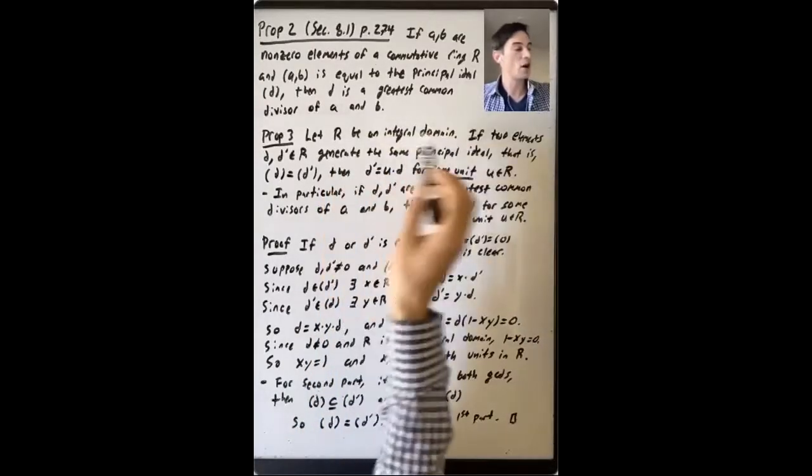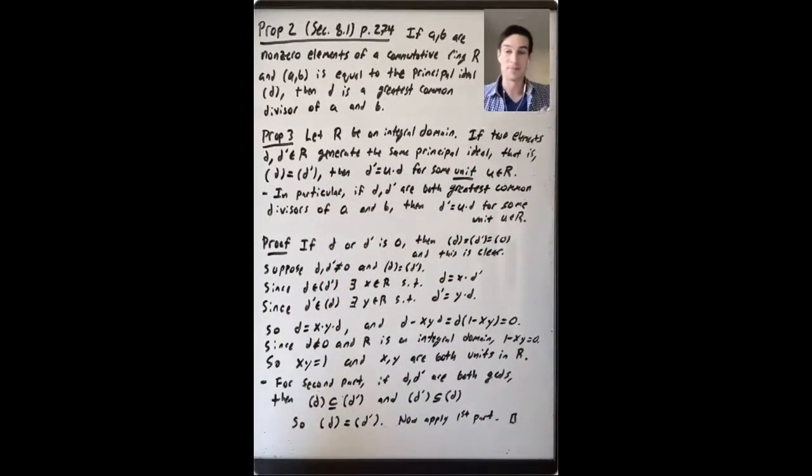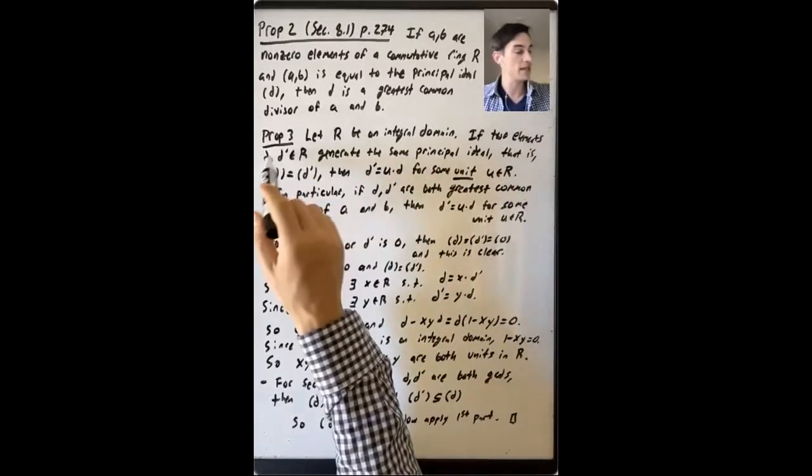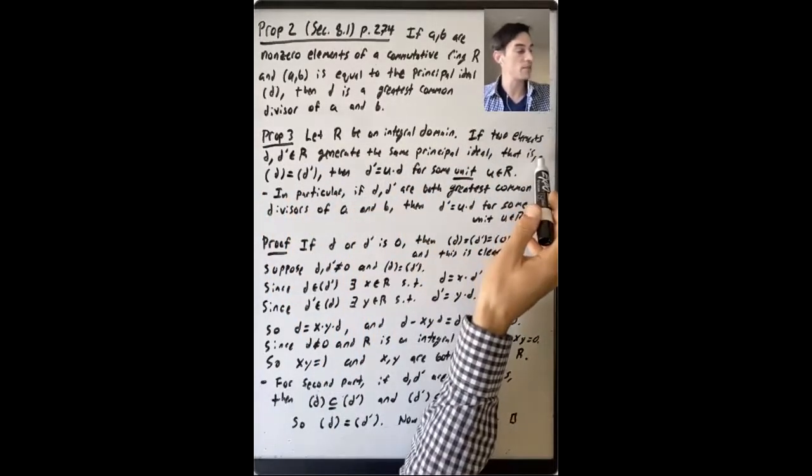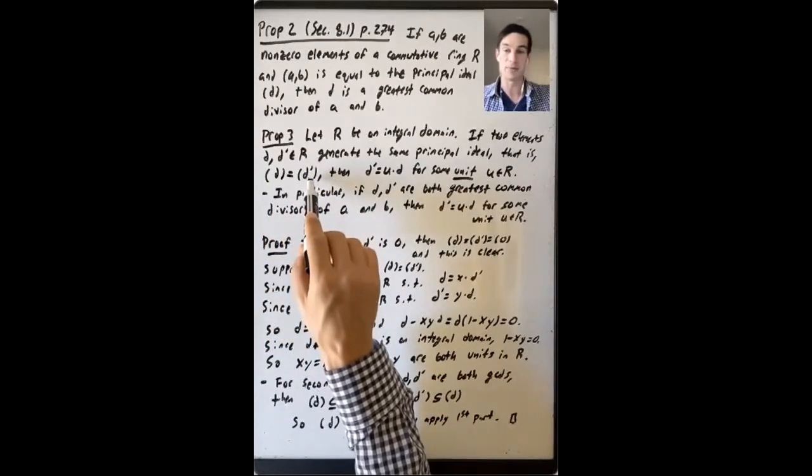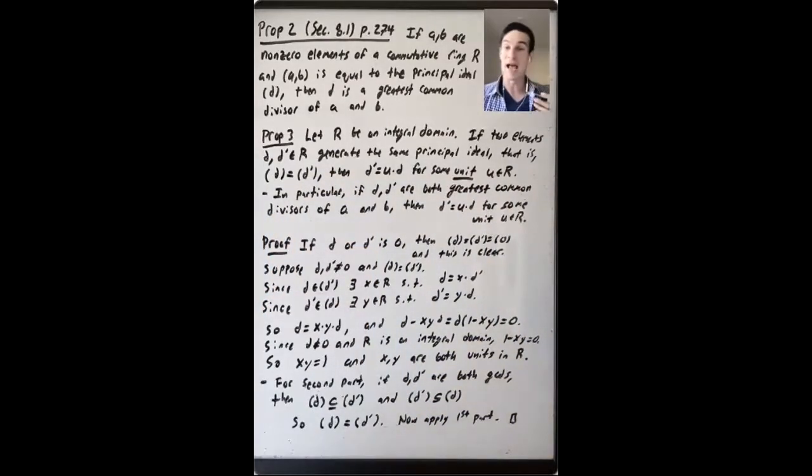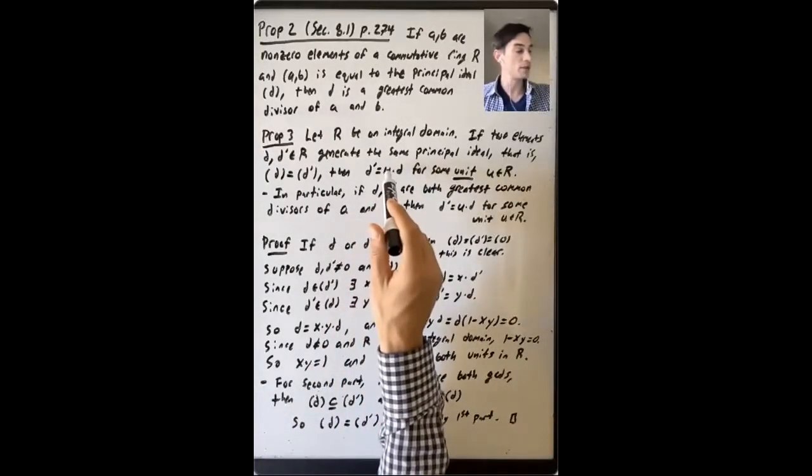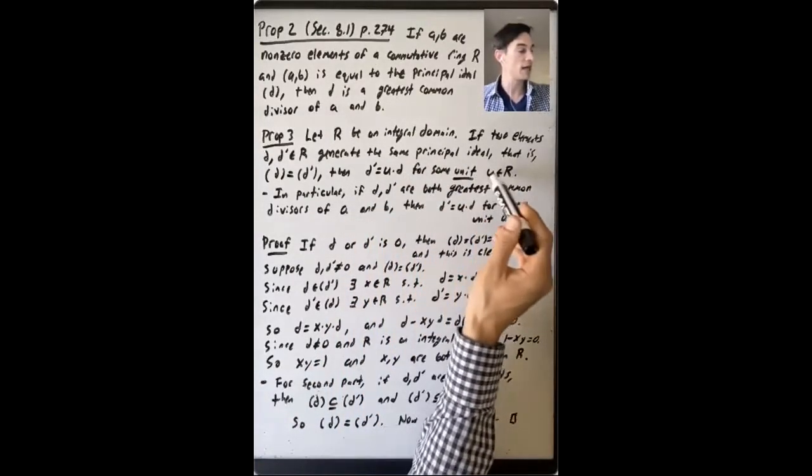So let's say that R is now just an integral domain. If you have two elements D and D' in R, and they generate the same principal ideal, so the ideal generated by D and the ideal generated by D' are equal, then how are those two elements related? D' is equal to U times D for some unit U in R.